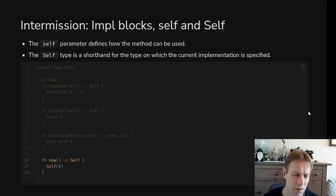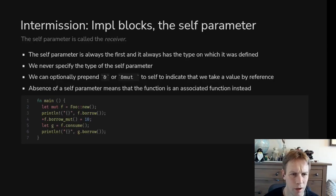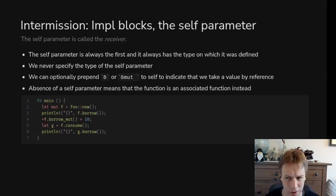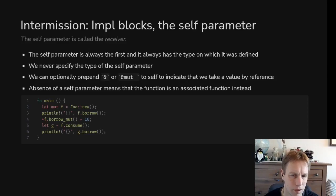A key point here is that lowercase-s self is the name — it has to be the name if you want something to be a method — and you'll either consume it or take a reference. You can also have associated functions. Some of these methods will use capital-S Self as a shorthand for the type of the thing you're in. The self parameter is called the receiver; it has to be the first argument and it has to be called self. We almost never specify the type of it because it is just the type of the thing. There are cases — like with Pin — where you might specify the type explicitly. You can use ampersand or ampersand-mut to make it take a reference, and if you don't have self then it's an associated function instead of a method.